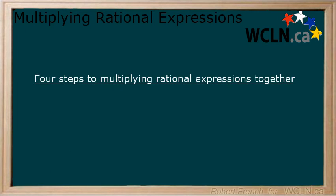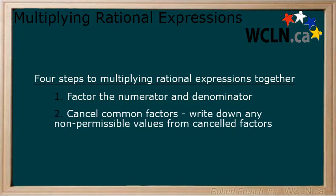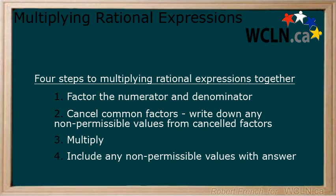There are four steps we are going to follow for multiplying rational expressions together. Step 1: Factor the numerator and denominator. Step 2: Cancel common factors. We will also write down any non-permissible values from cancelled factors here. These two steps keep our calculations smaller and make the problem easier to work with. Step 3: Multiply. Step 4: Include any non-permissible values with your answer.